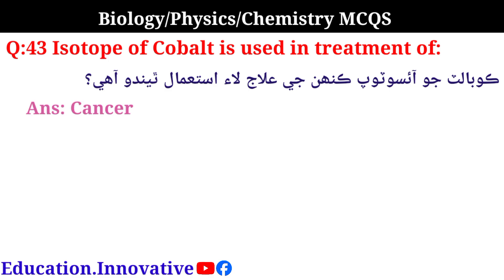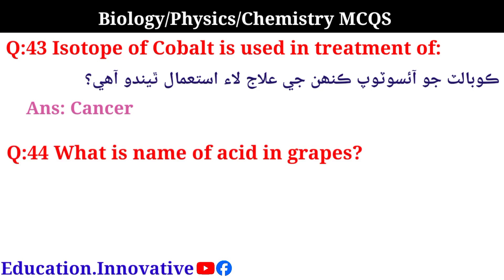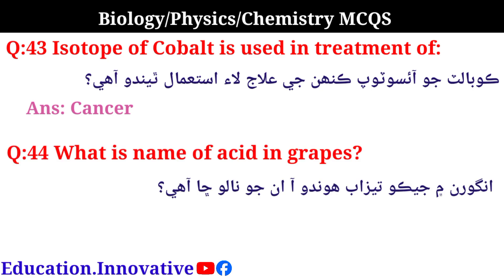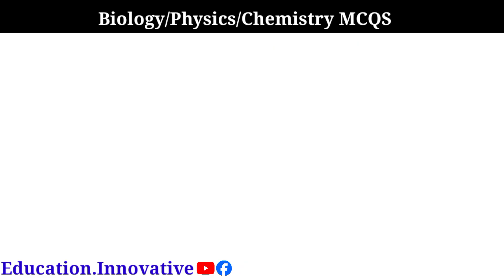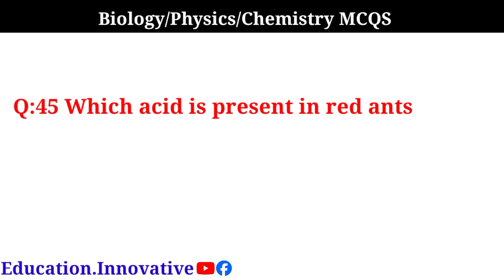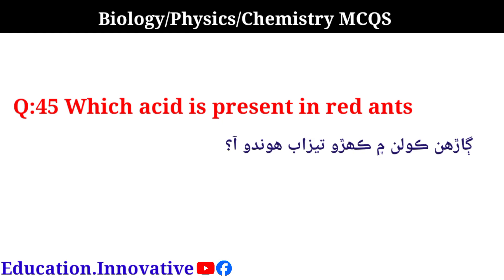Next question: What is the name of the acid in grapes? The correct answer is tartaric acid. Next question: Which acid is present in red ants? The correct answer is formic acid.